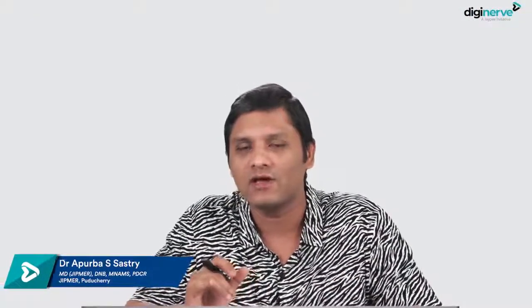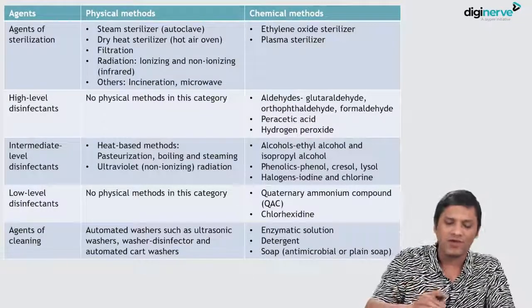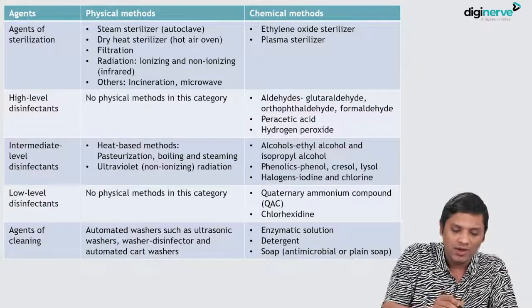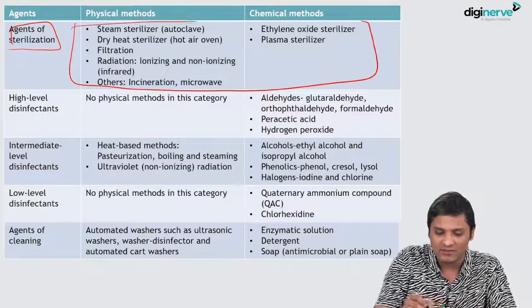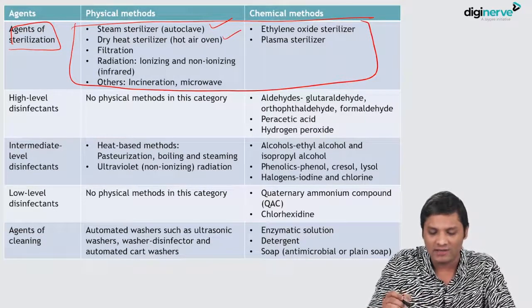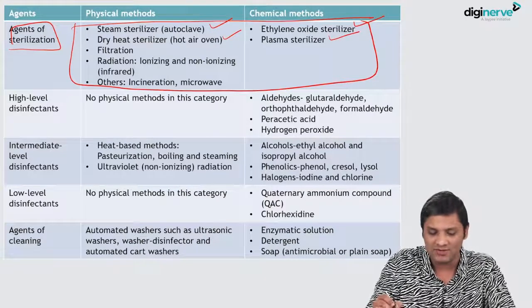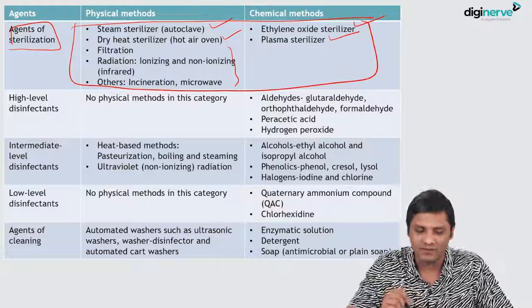Let us see an overview of the various agents of sterilization and disinfection. The various agents can be classified into agents of sterilization, which we discussed in the previous session: steam sterilizer or autoclave, hot air oven or dry sterilizer, ethylene oxide sterilizer, plasma sterilizer, and various other less common modes of sterilization.